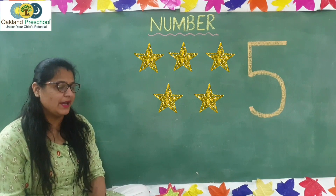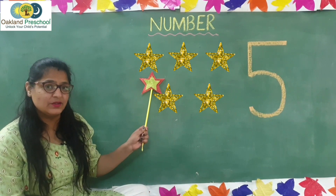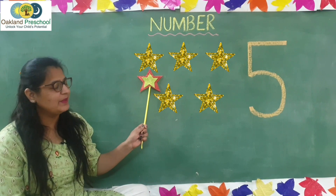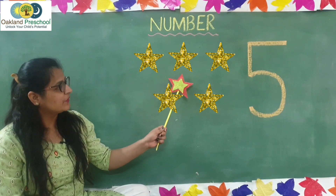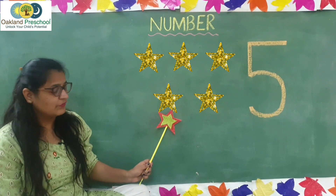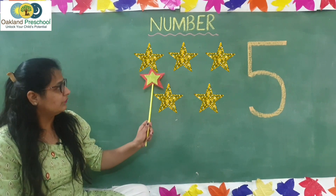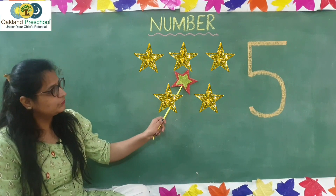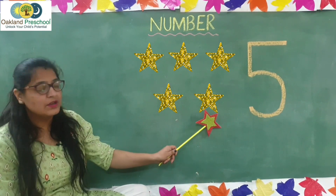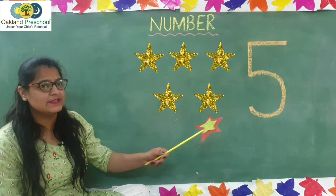Let's try one more time. What do you see here? These are stars. How many stars are there? Count with me: 1, 2, 3, 4, 5. How many stars are there? There are 5 stars.